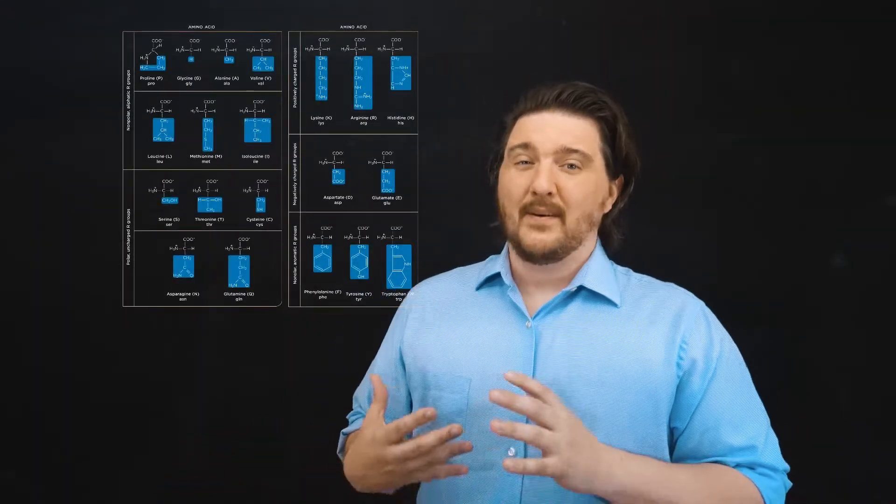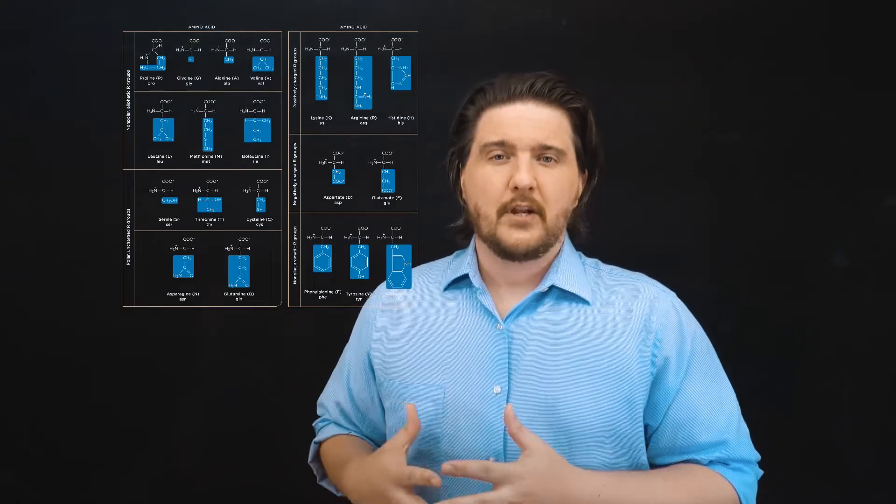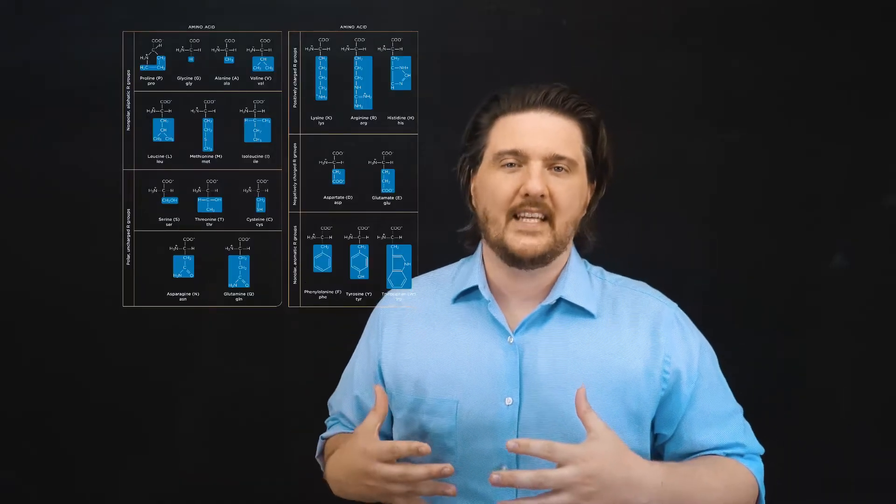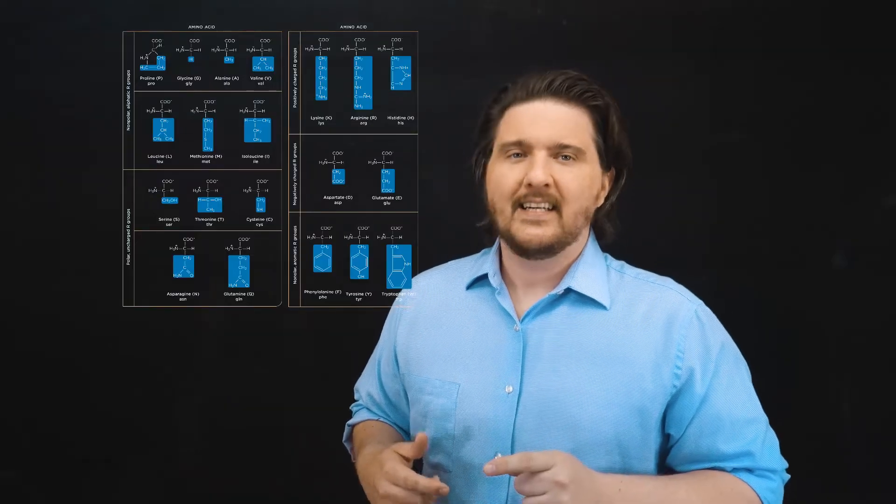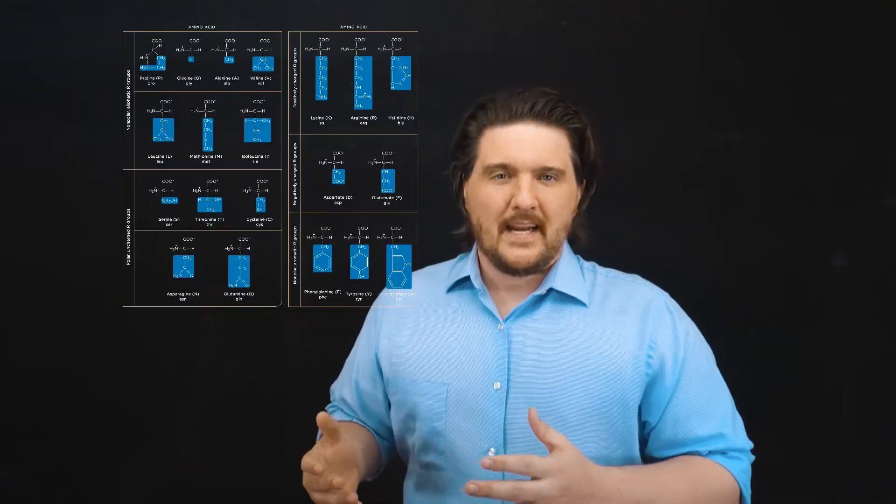So, there are 20 main amino acids. These amino acids have all sorts of different properties. Note that when I say there's 20, there's 20 main ones that we see in humans. There is actually a 21st named selenocysteine, looks just like cysteine, but it's got a selenium instead of a sulfur.